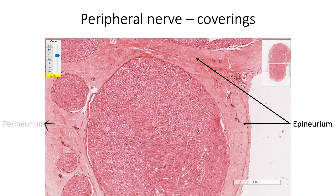Perineurium covers individual nerve fascicles. It consists of specialized connective tissue made of alternating layers of flattened polygonal cells and collagen. These flattened polygonal cells form tight junctions with adjacent cells, contributing to the blood-nerve barrier.